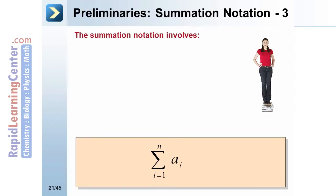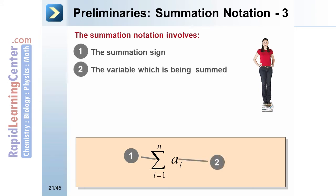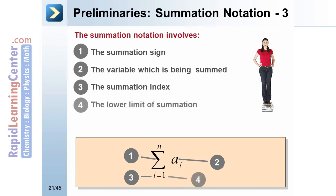The summation notation involves the summation sign, the variable which is being summed, the summation index, the lower limit of summation, and the upper limit of summation.